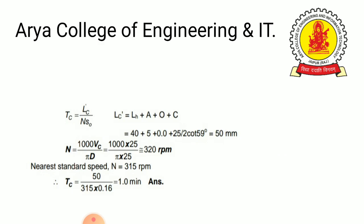We calculate the machining time using Tc = Lc / (N × S0), where Lc = Lh + A + O + C. So Lc = 40 + 5 + 0 + (25/2) × cot59° ≈ 50 mm. N = (1000 × Vc) / (π × D), which calculates to approximately 315 rpm. Putting the values into the formula: Tc = 50 / (315 × 0.16) = 1.0 minute.